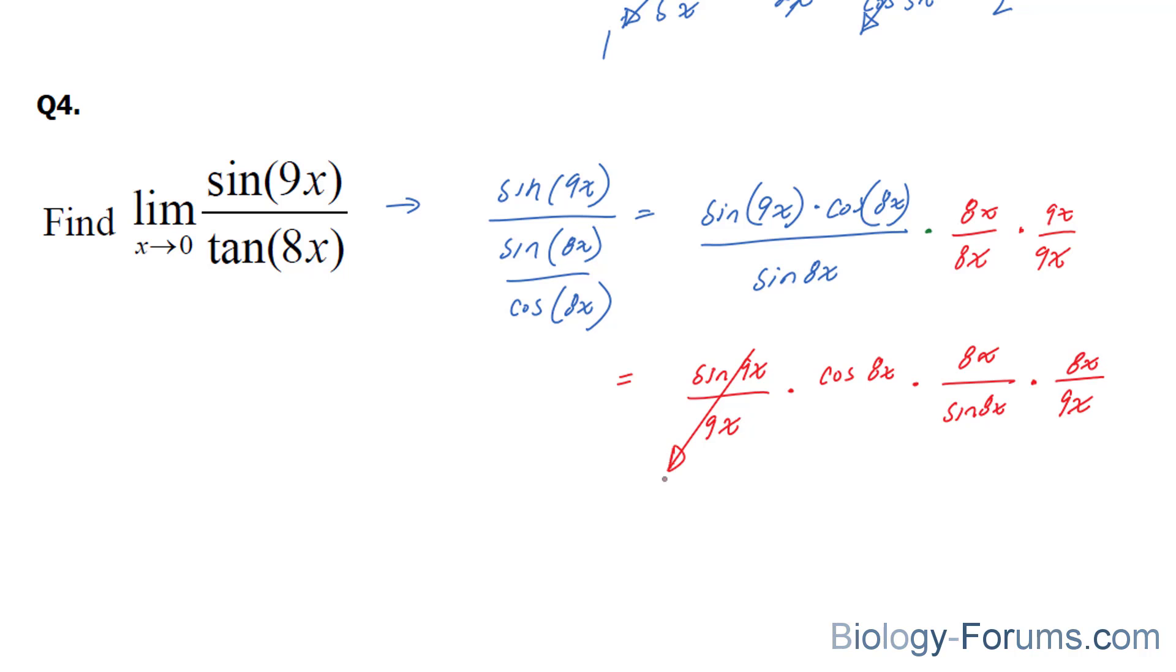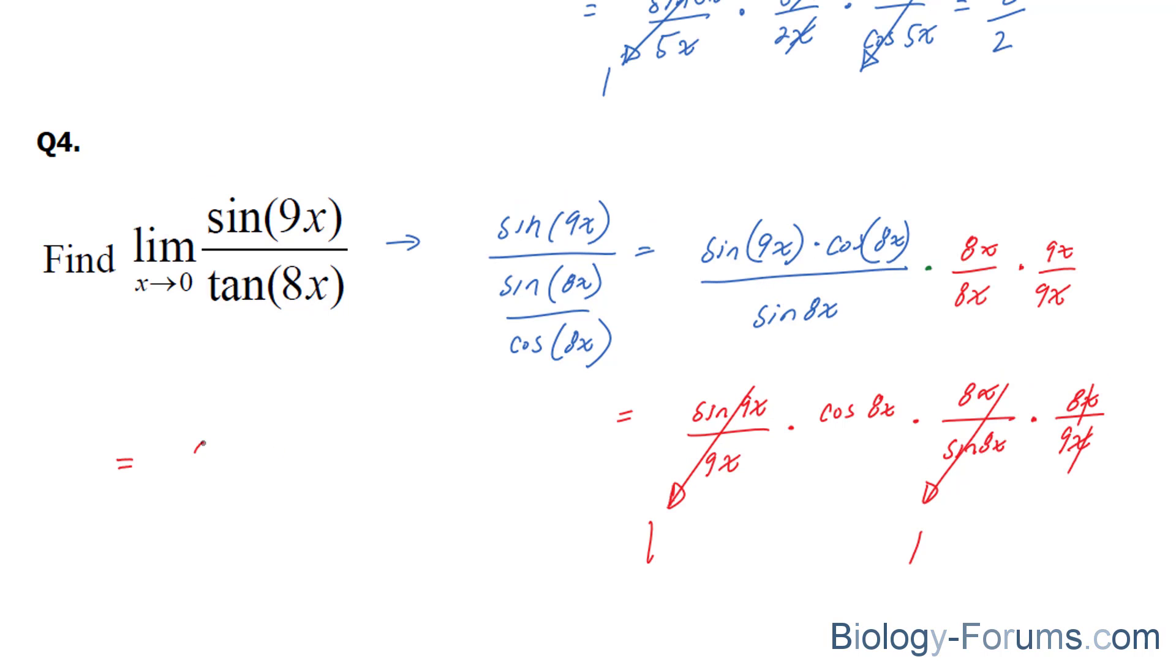So this becomes 1, this becomes 1. The two x's cancel out, and you're left with 8 cosine 8x over 9. Remember, if you were to apply 0 to this trigonometric function, it will go to 1. And your final answer is 8 over 9.